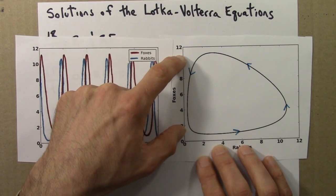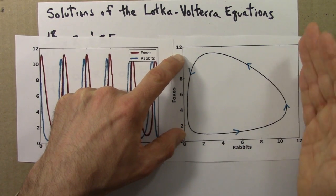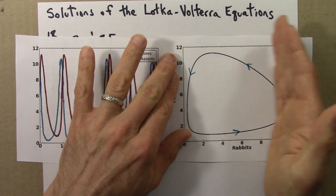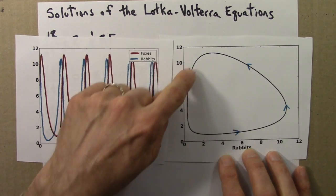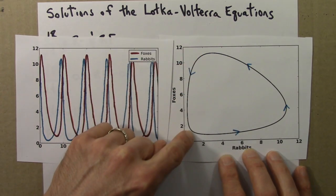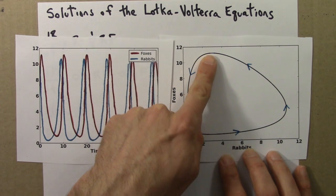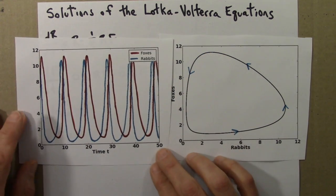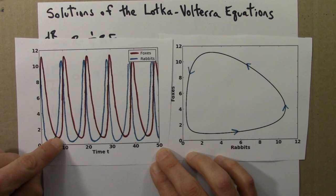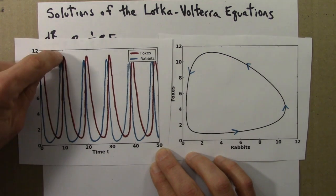If we think just in terms of the foxes, if we ignore the rabbits, that's sort of like maybe imagining we're compressing this in. The foxes go down to about 1 and their maximum is about 11. And that's what we see here. The foxes go down to about 1 and up to about 11.